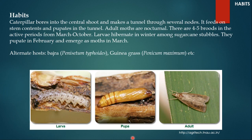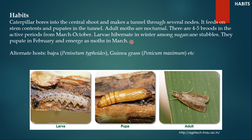Let us talk about its habits. The caterpillar bores into the central shoot and makes a tunnel through several internodes. It feeds on stem contents and pupates in the tunnel. Adult moths are nocturnal like any other moth. There are 4 to 5 broods in the active period from March to October. Larvae hibernate in winter among sugarcane stubbles and pupate in February, emerging as moths in March. There are also many alternate host plants such as bajra and guinea grass.